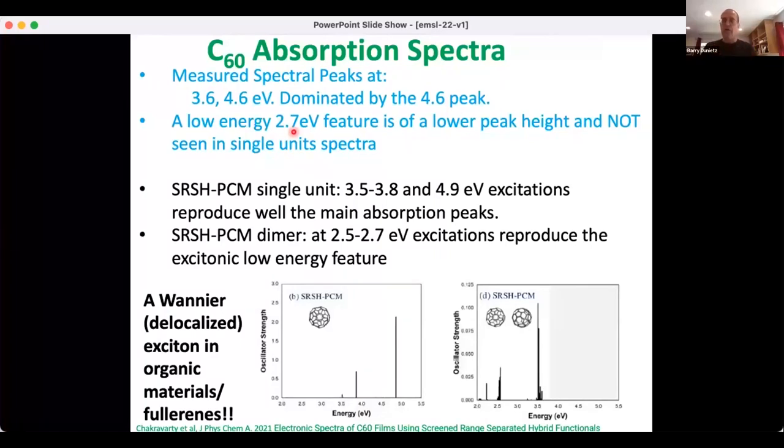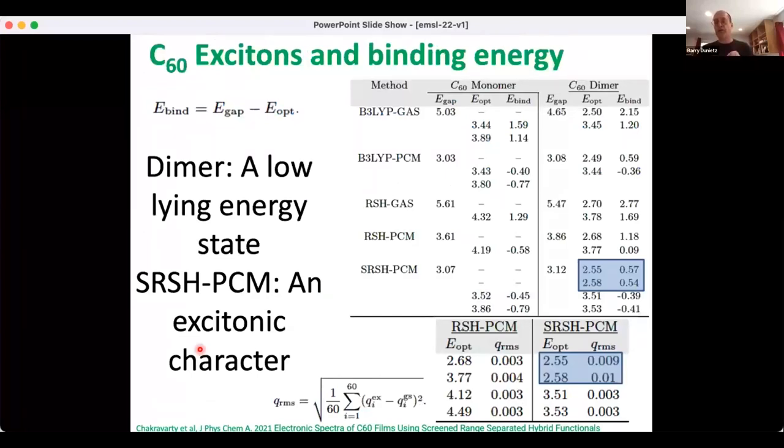That peak is reproduced only with the screened RSH PCM approach when using at least two molecules within that PCM. That highlights that we confirm interpretations that the spectra indicate existence of excitons in this organic material, and we point out the success of the approach with the dimer to reproduce the excitonic binding energies that have been measured. Other levels of theory miss these excitonic states or providing agreement with excitonic energies.